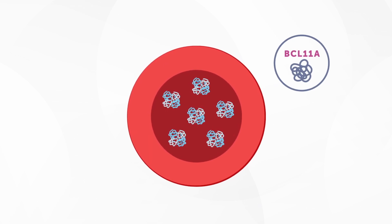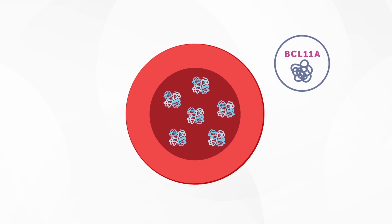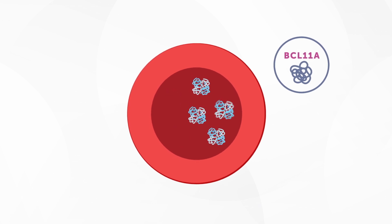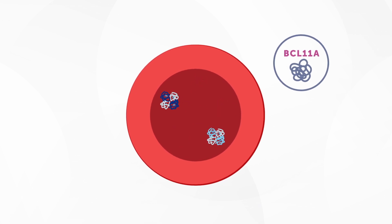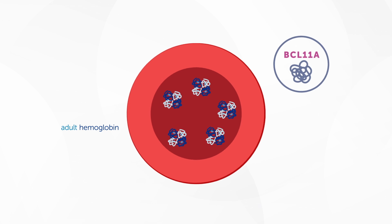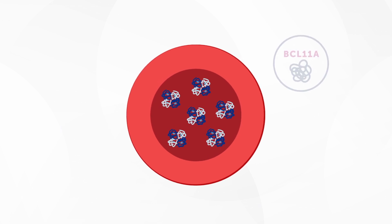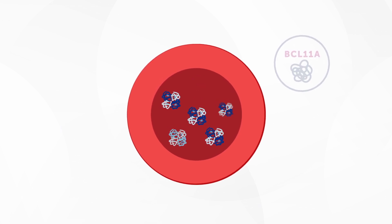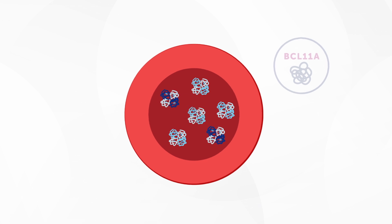When BCL11A is well expressed — which is happening in all of our cells right now in our bone marrow — it suppresses the production of fetal hemoglobin, and we mostly produce adult hemoglobin. When it's turned down, we can actually induce more fetal hemoglobin. That's essentially what the therapies are trying to do: reverse that switch by turning down BCL11A and turning up the fetal hemoglobin molecule.